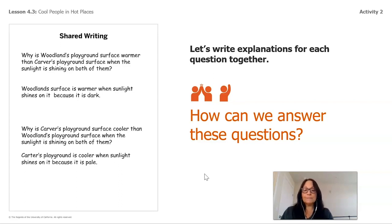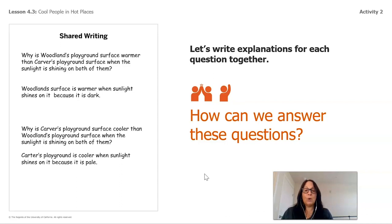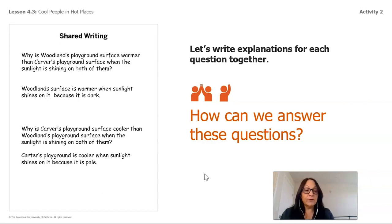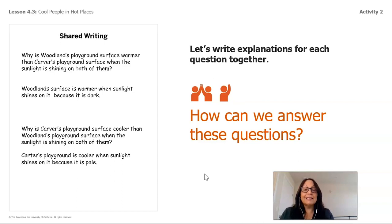Ready for the second question? Why is Carver's playground surface cooler than Woodland's playground surface when the sunlight is shining on both of them? I'll give you a minute. I hear some really good answers! My answer is: Carver's playground is cooler when sunlight shines on it because it is pale. So we used both words—dark and pale.